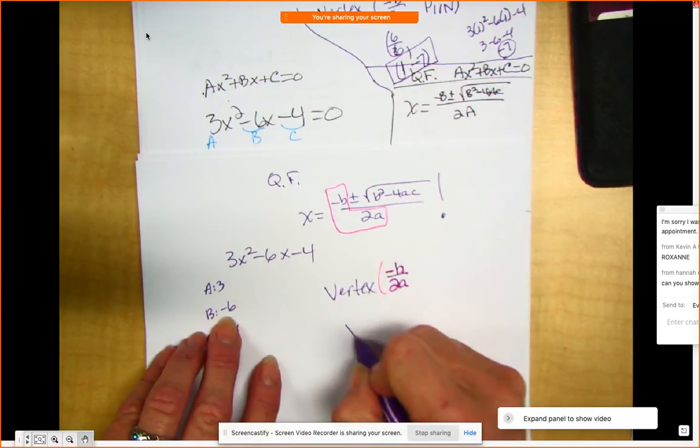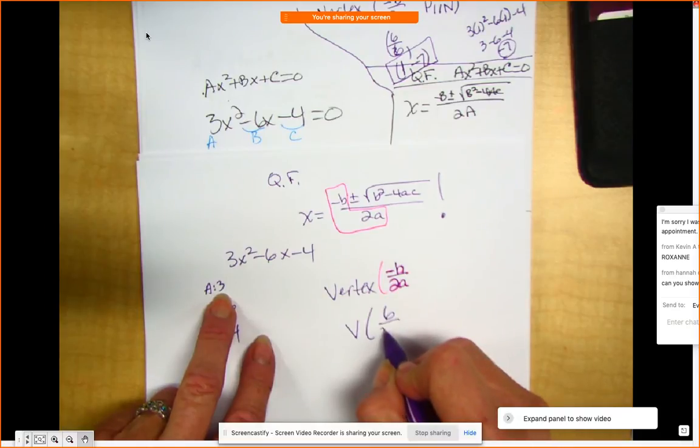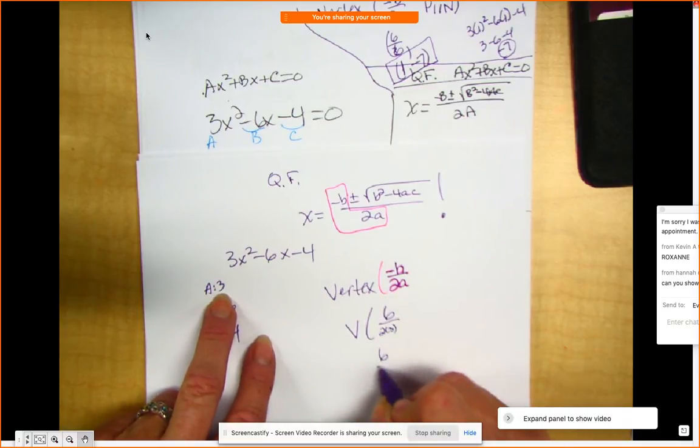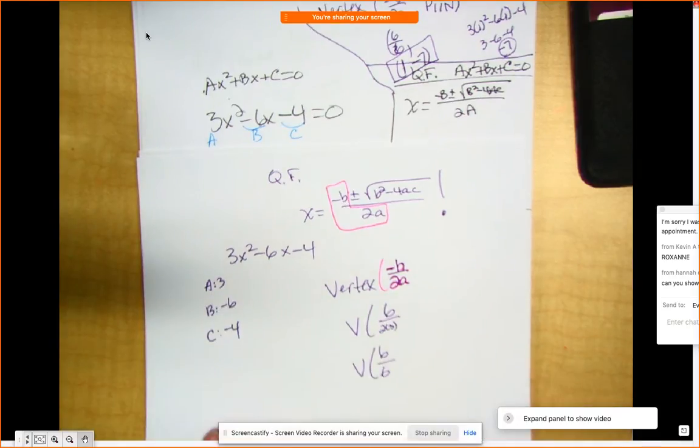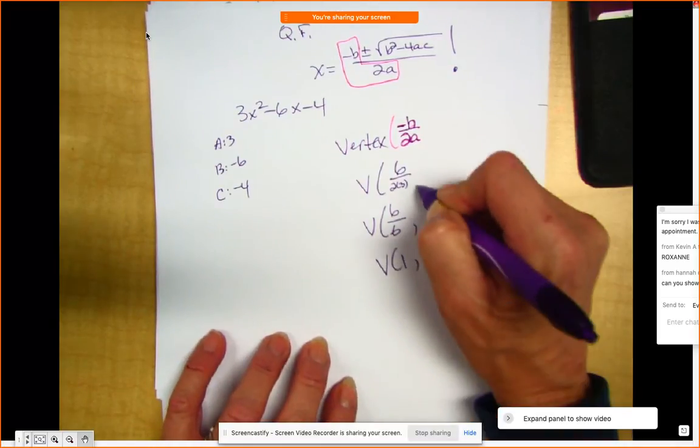What's the opposite of b? Well, 6. What's 2 times a? It would be 2 times 3, so I'd end up with 6 over 6. Do you see how that would be a 1? 6 divided by 6 is 1. So I know the first part of my vertex.